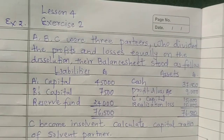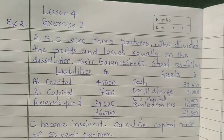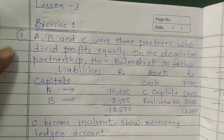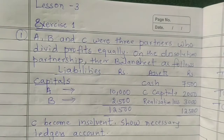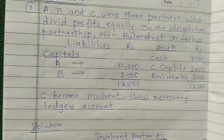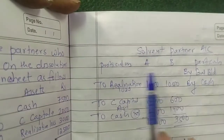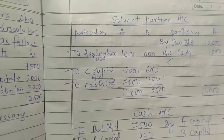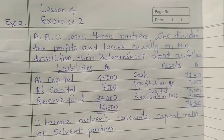Hello everyone, welcome back to Financial Accounting, second semester NEP paper. We are on lesson number four of this unit on insolvency accounts. In the previous lecture, exercise number one, we learned how to prepare the insolvent partner account and capital deficiency, where solvent partners must bring cash — in that case two thousand four hundred and six hundred — and we prepared the solvent partners account and finally the cash account.